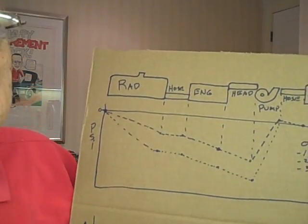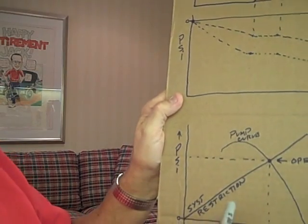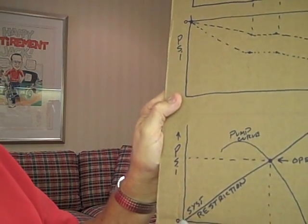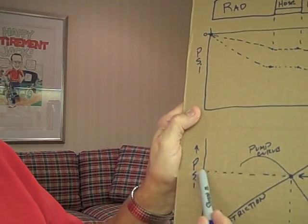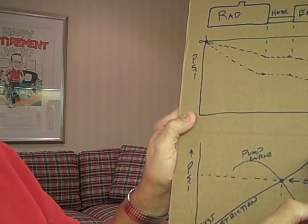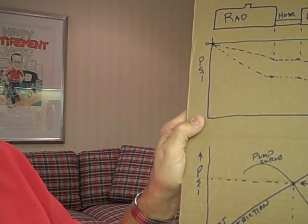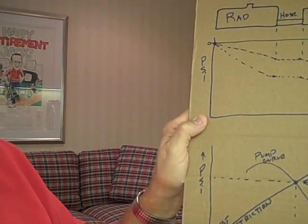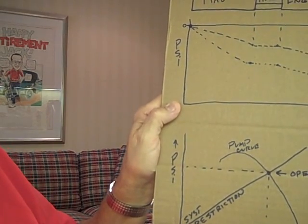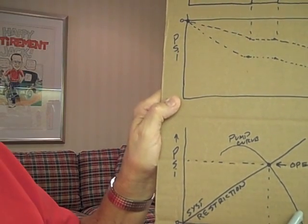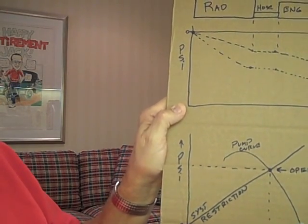I've got a chart here showing pressure and flow. This is a system restriction curve. If you push a lot of water through the radiator, there's a lot of flow. You can plot that and get a system restriction curve. Then you do a pump curve. As you pinch off the outlet, you reduce the flow and the pressure goes up. Every system has a pump curve at a certain rpm and a restriction curve.